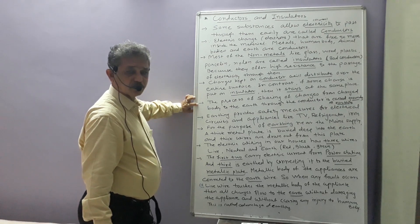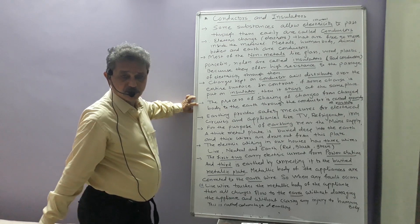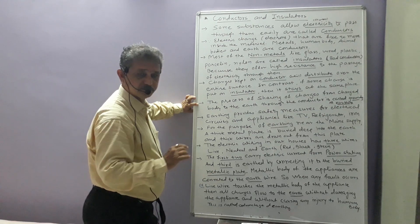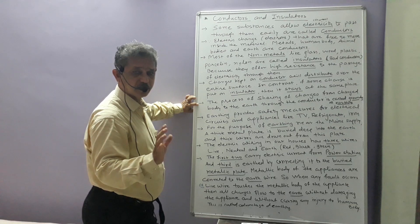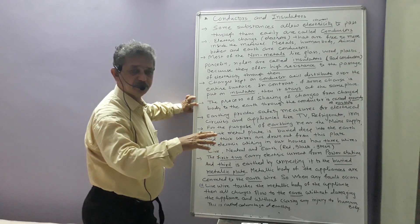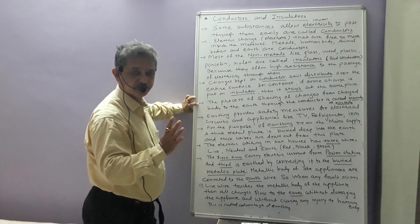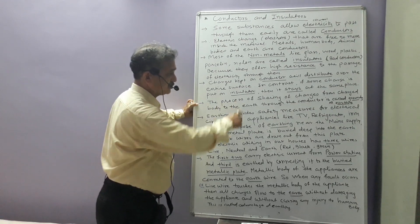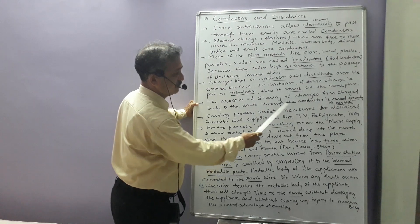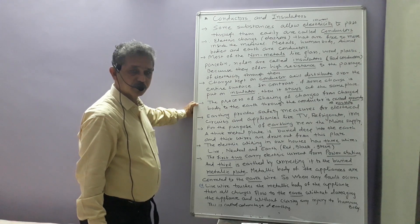Now let us understand another topic: earthing or grounding. When we take a charged body and allow it to come in contact with the earth through a conducting wire or any conducting body, the excess charges from this charged body easily enter into the earth through the conducting body. This process of sharing charges from a charged body to the earth through a conductor is called grounding or earthing.